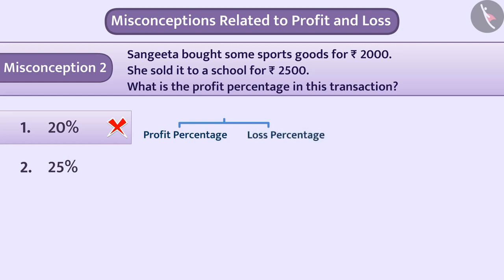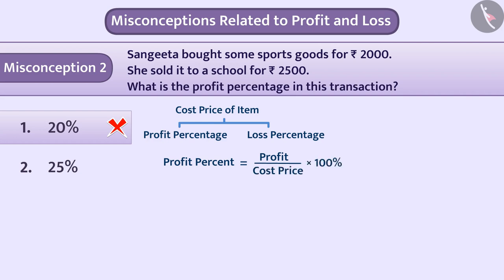Remember, profit or loss percentage is always obtained on the cost price of the item. The cost price is always the base for finding profit or loss percentage. So the correct formula is: profit percentage = (profit ÷ cost price) × 100 = (500 ÷ 2000) × 100 = 25%. Hence, option 2 is the correct answer.